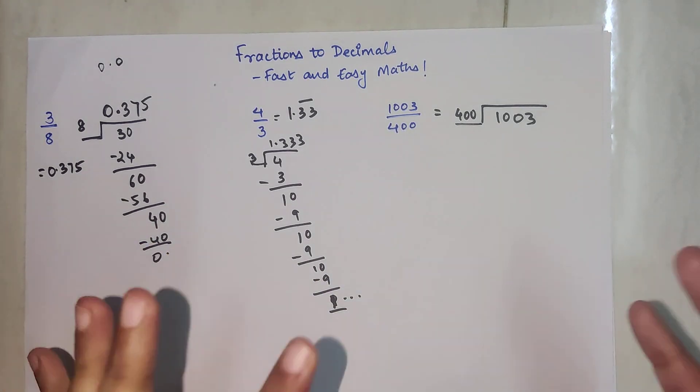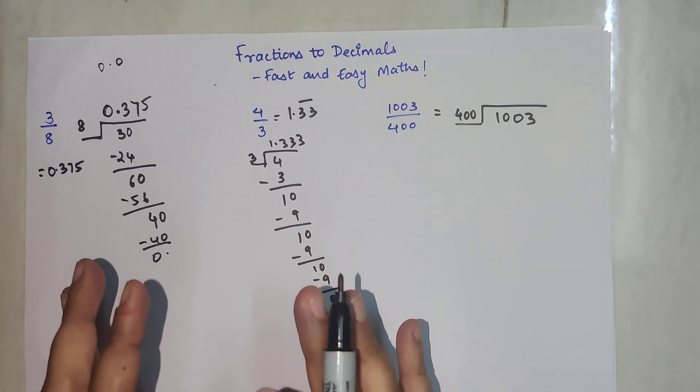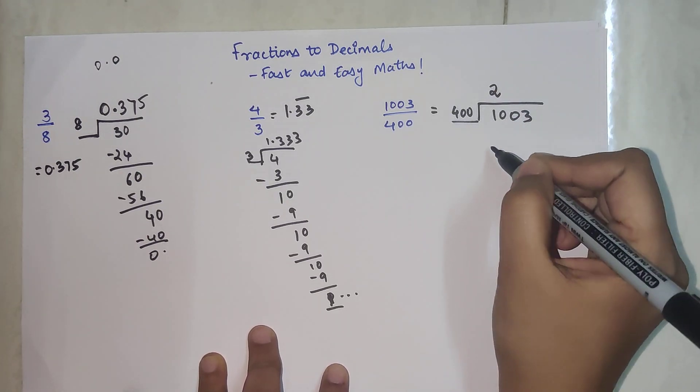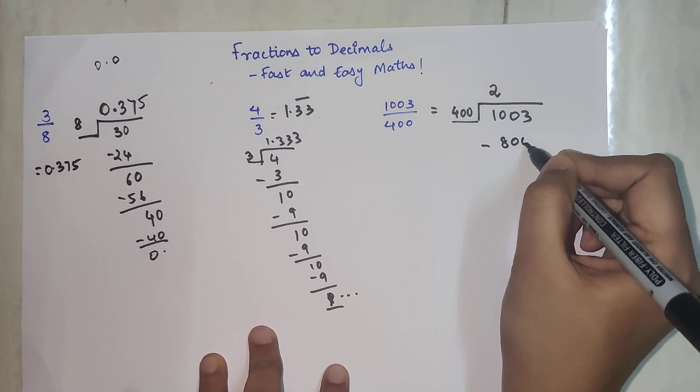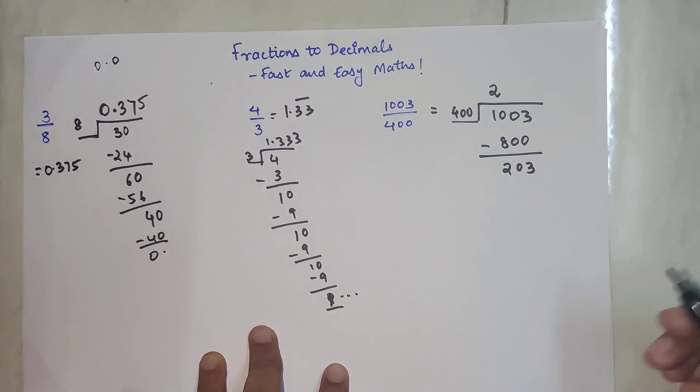1200 is very big. Please understand, in division you need to have numbers which are exact or smaller than the given number inside. So we can have 2 times 4, 2 times gets you 800. So we're left with 203.